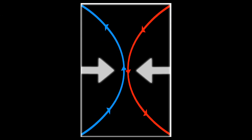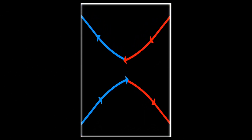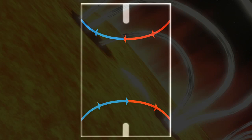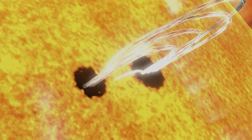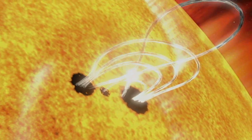Magnetic reconnection is when magnetic fields connect and disconnect, explosively transferring energy. Scientists believe magnetic reconnection drives almost every dynamic event on the Sun, including solar flares.